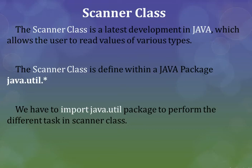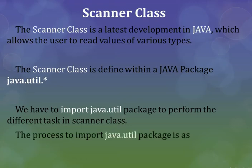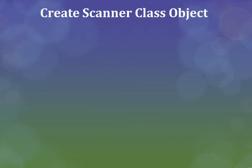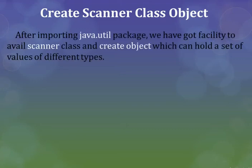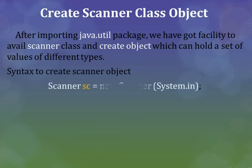The process to import the java.util package is: import java.util.*; followed by a semicolon. Create a Scanner class object. After importing java.util package, we have the facility to use the Scanner class and create an object which can hold a set of values of different types. The syntax to create a Scanner object is: Scanner sc, where sc is an object of the Scanner class.